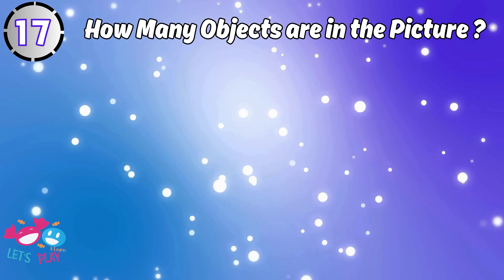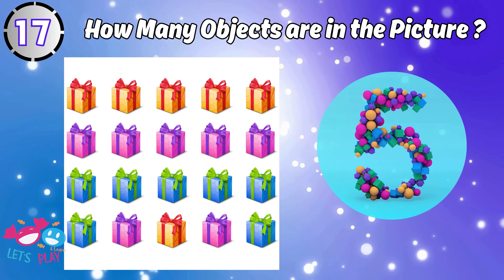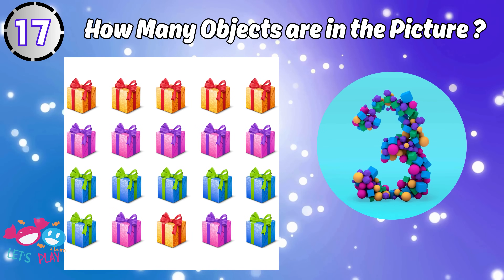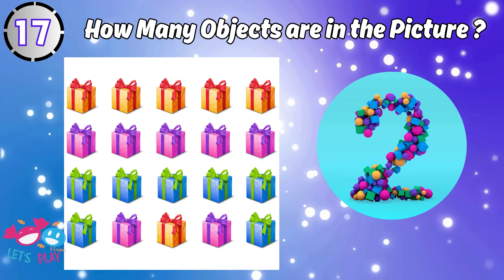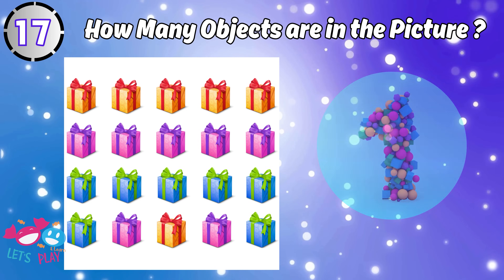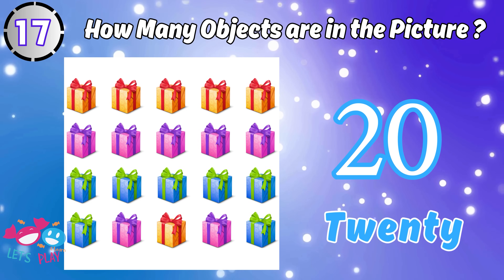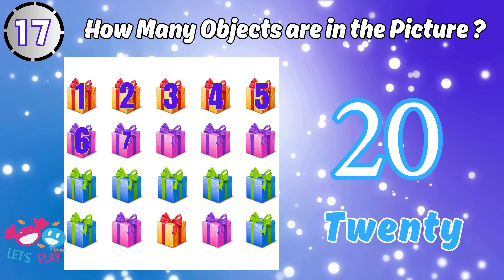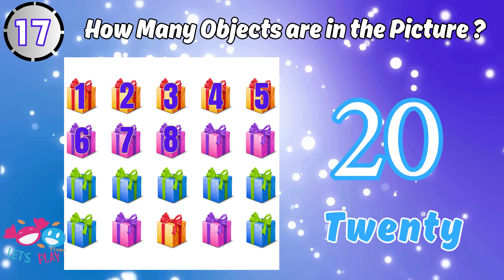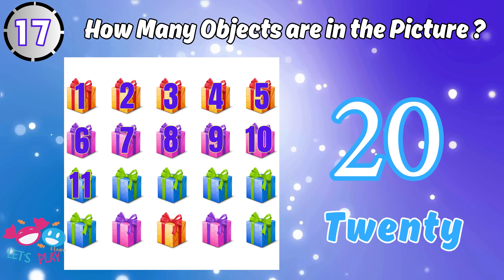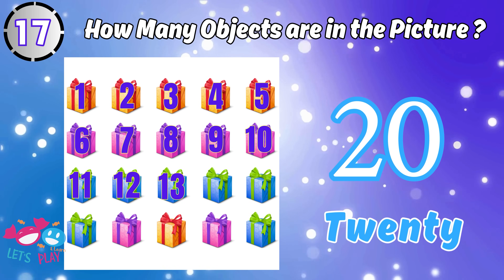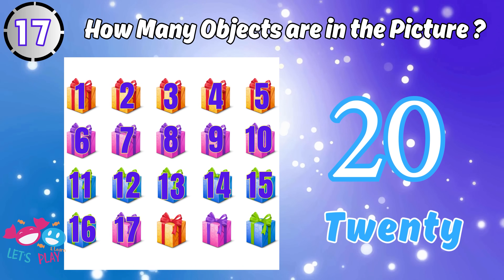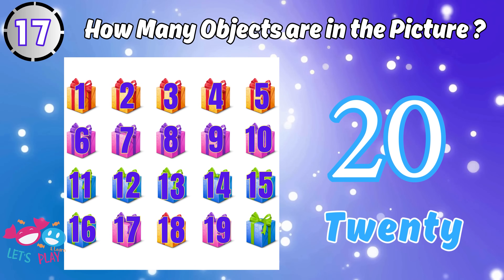How many objects are in the picture? Eight. One, two, three, four, five, six, seven, eight, nine, ten, eleven, twelve, thirteen, fourteen, fifteen, sixteen, seventeen, eighteen, nineteen, twenty.